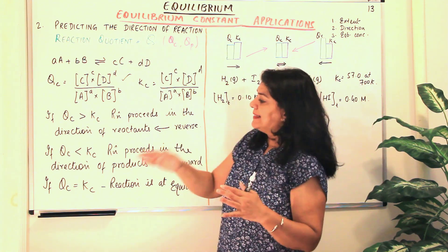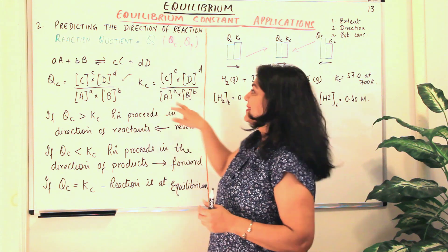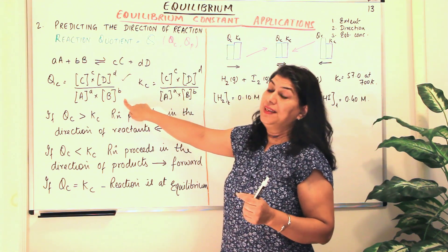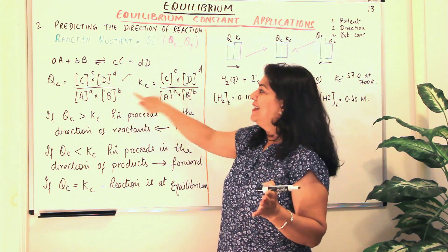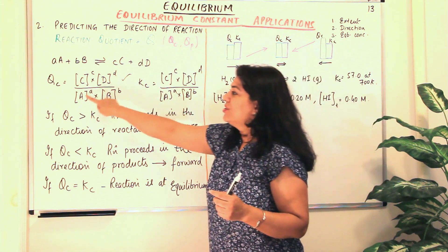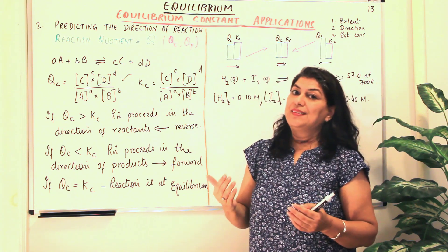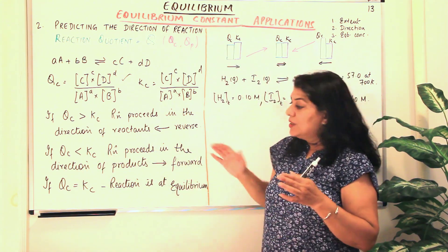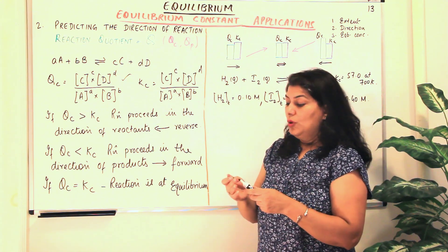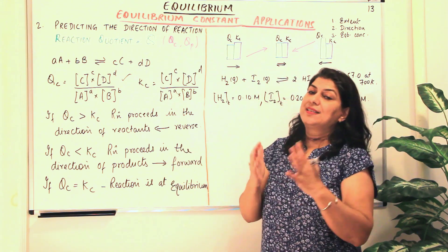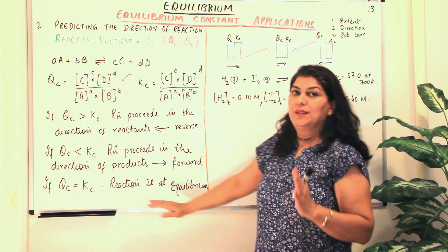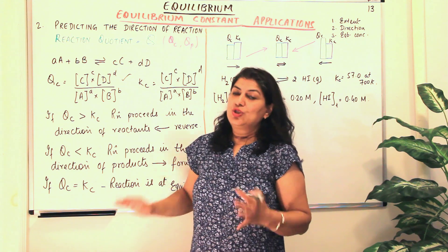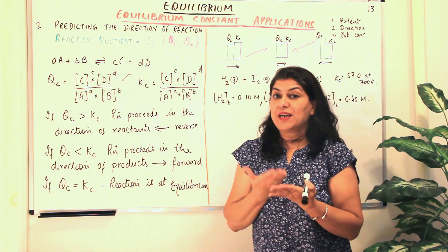If Qc is less than Kc, it means the denominator is larger — the concentration of the reactants is more. So the reaction will proceed in the forward direction, towards the products, until Qc equals Kc. When Qc equals Kc, the concentrations of reactants and products have become constant, meaning the reaction has already arrived at the equilibrium state.